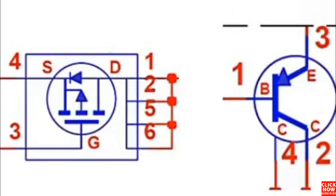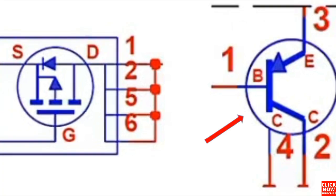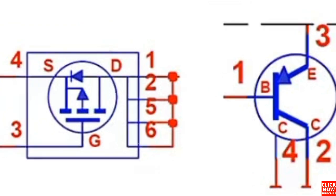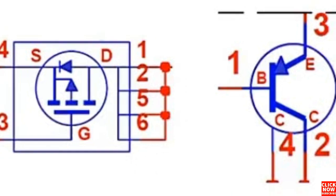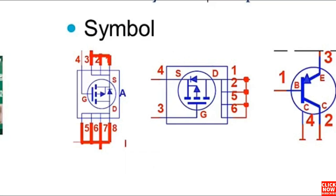For the MOSFET with 3 terminals, the same working principle applies. You can find the gate, drain, and source. A transistor also has 3 terminals: base, collector, and emitter. The transistor has the same working principle as the MOSFET — it has a base where it receives the control signal. When the base is activated, the transistor lets current pass through the emitter and collector.